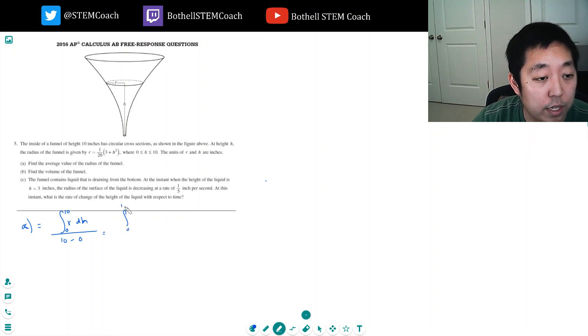Okay so I'm going to integral 0 to 10, 1/20th (3 plus h squared). I'm going to bring this 1/20th out and that 1/20th can combine with that 10 to be 1 over 200. Integral 0 to 10, 3 plus h squared dh. It's 1 over 200.